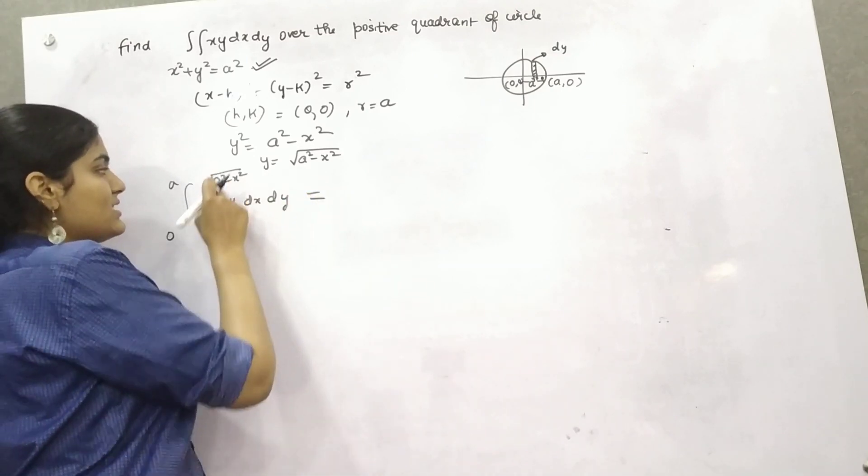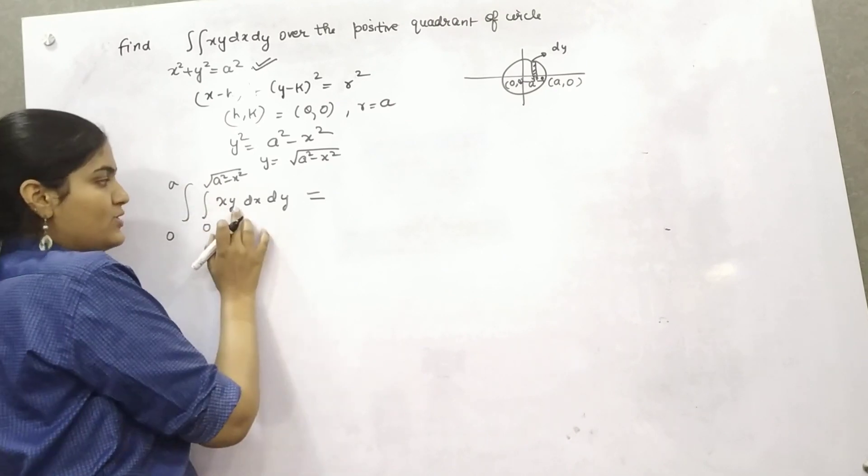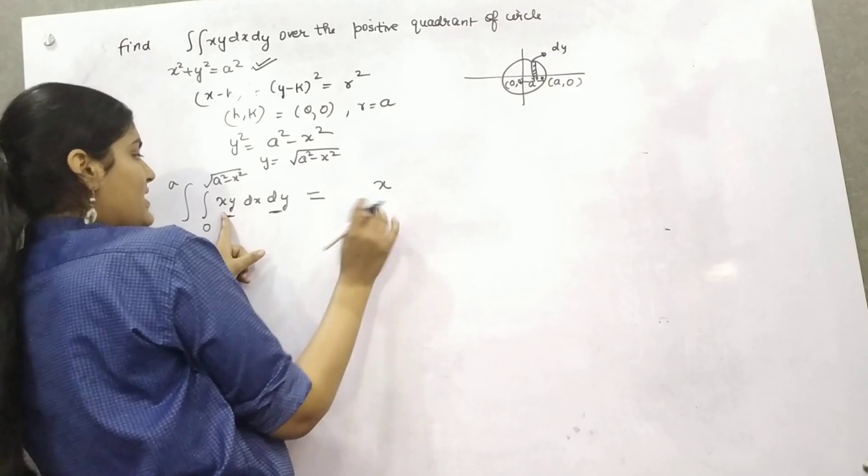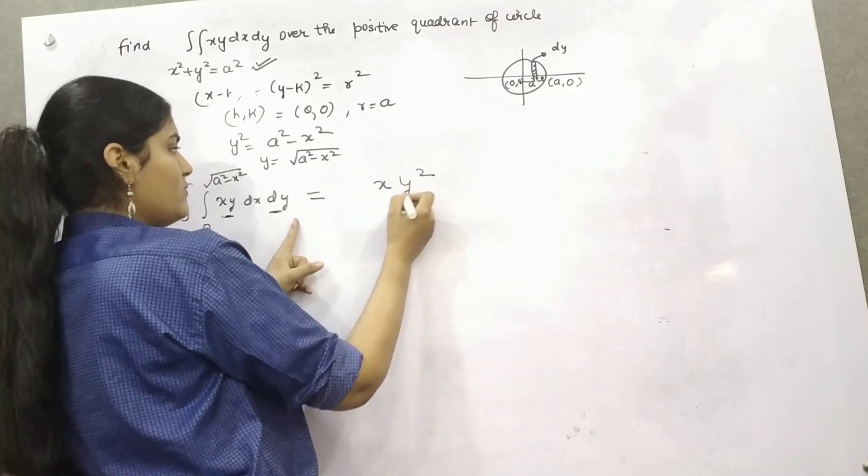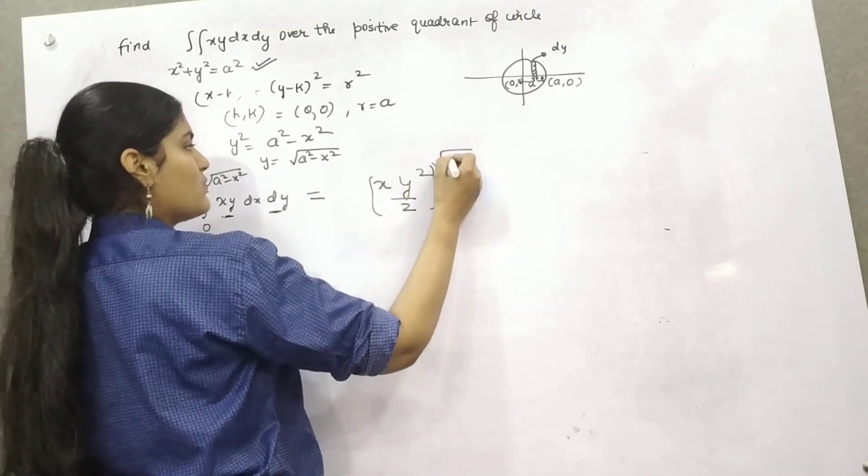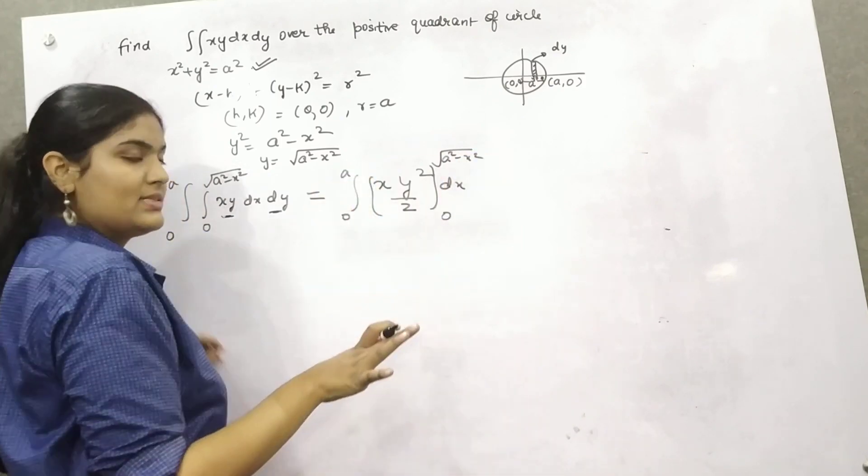Now, because this is the limit for y value, so that's why you have to take dy first. So x is constant if you integrate y dy, so y square by 2, limit 0 to root (a square minus x square), dx is still here.